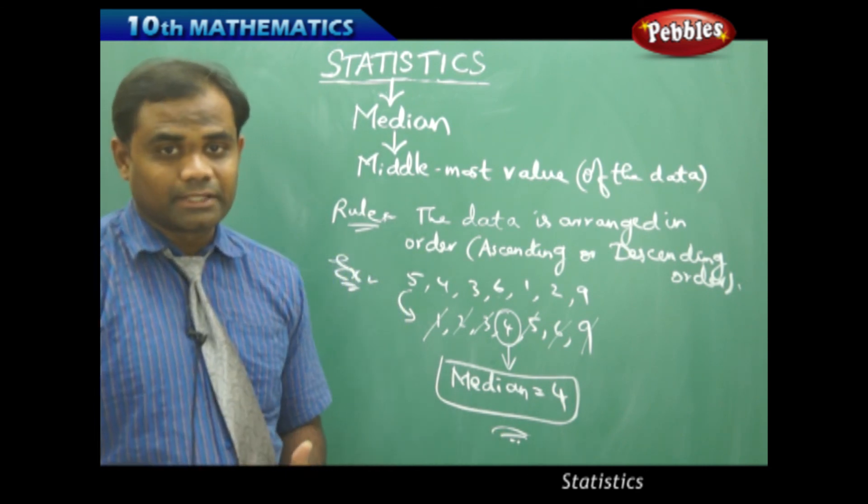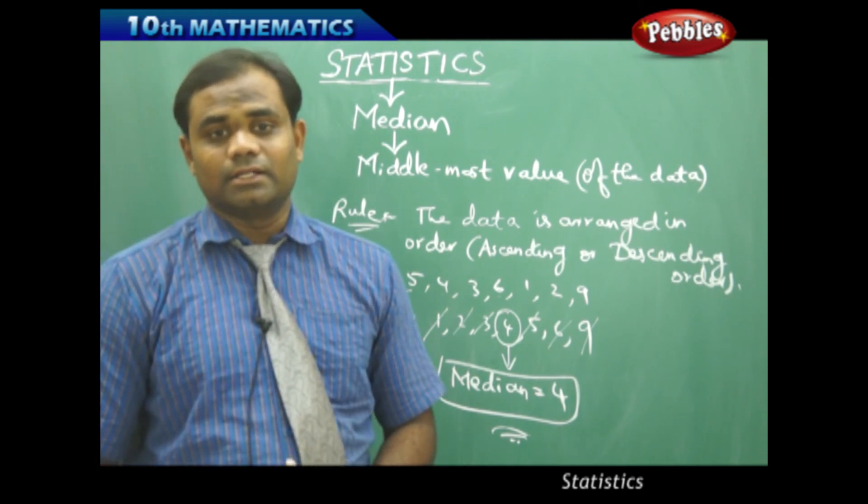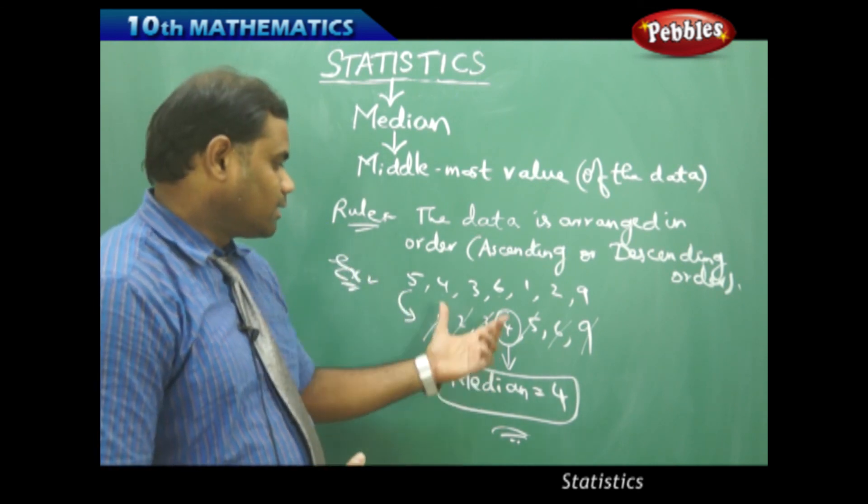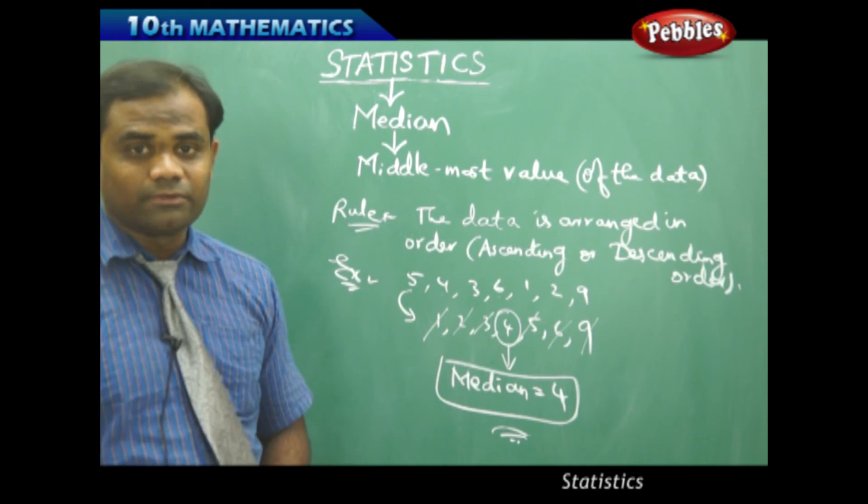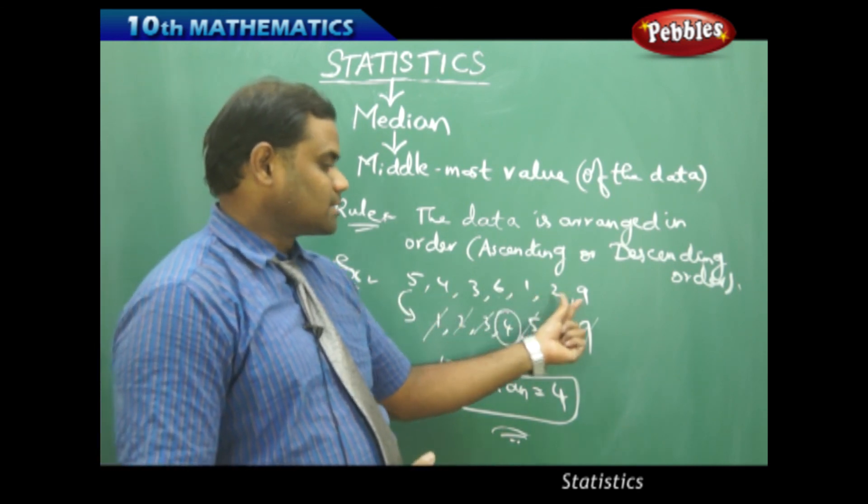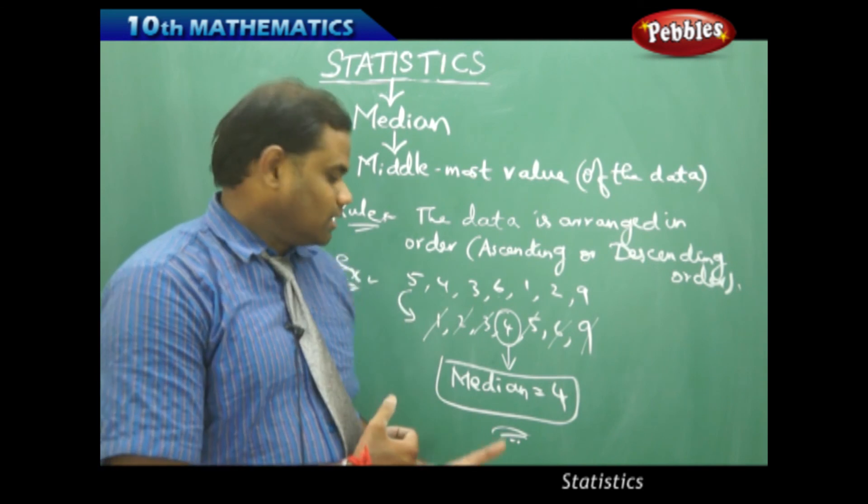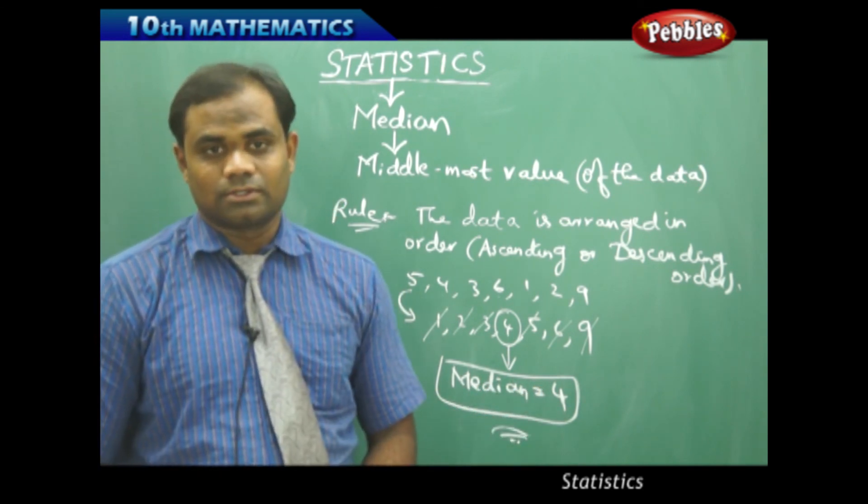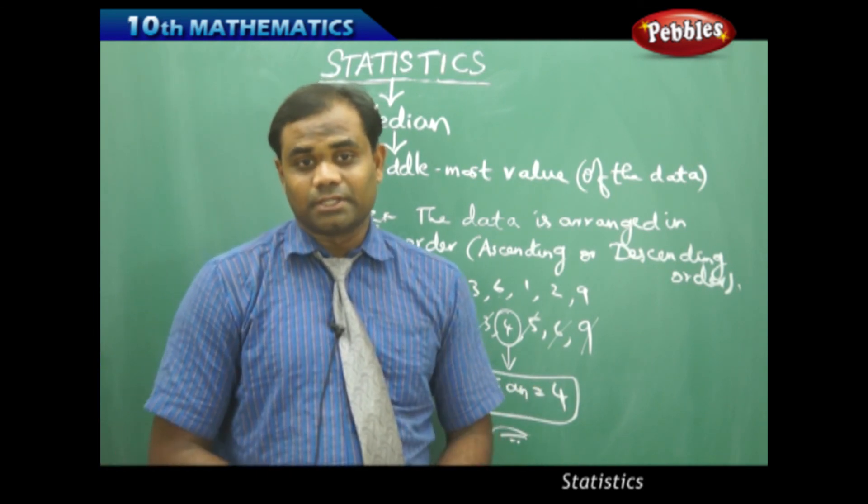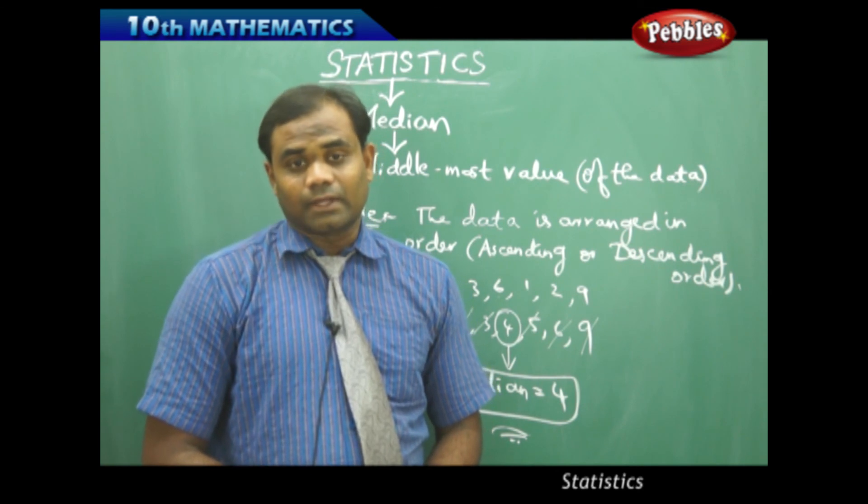So therefore, let's see two different cases where n is even and n is odd. This example where n is odd, n is the number of observations, therefore 1, 2, 3, 4, 5, 6, 7. So n is odd, therefore I got median is 4. So let's come with two different special cases, n even and n odd.